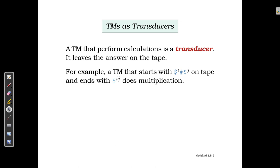When we multiply these two, it should return the same string raised to power i times j. If it does that and the answer is there on the tape, then this machine will be considered a transducer.